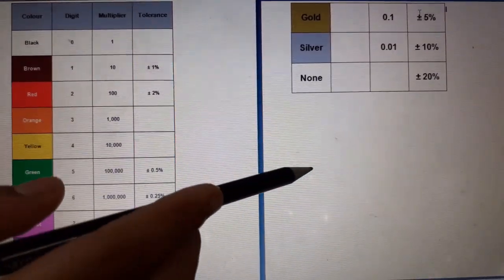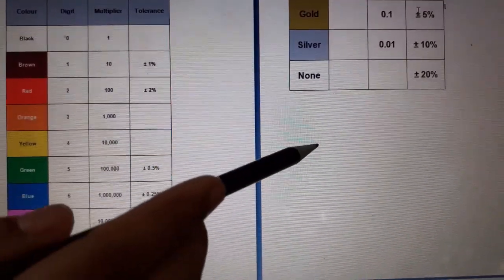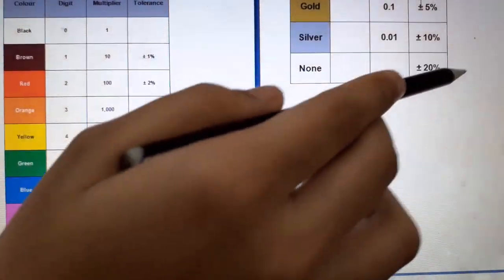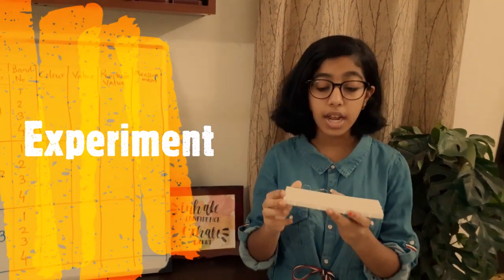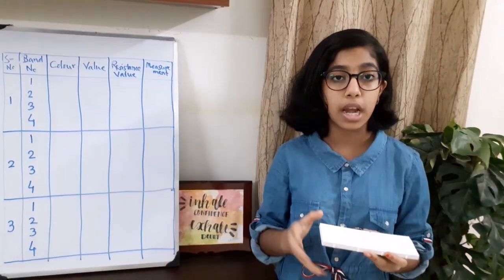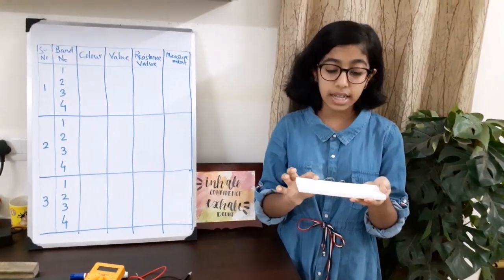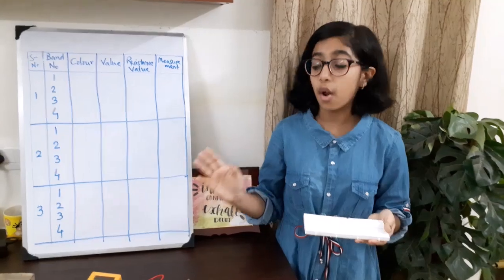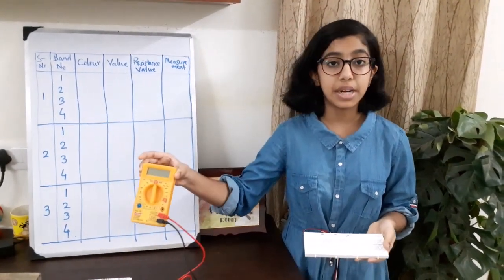In case of three band resistors, there is no tolerance band, so the default tolerance is 20%. Let us do some practical work. Here, I have three resistors which have four color bands. Now let us calculate the resistance of these resistors using the color band and also verify that using the multimeter.